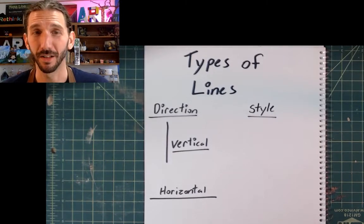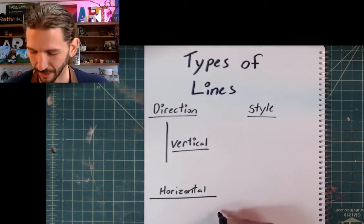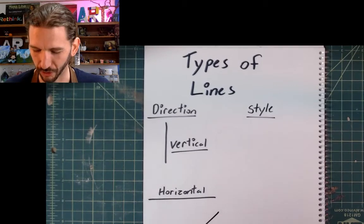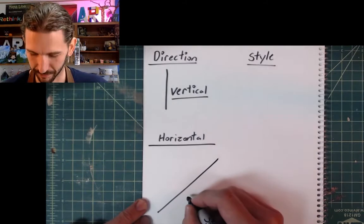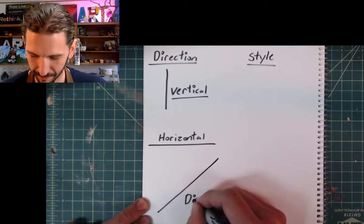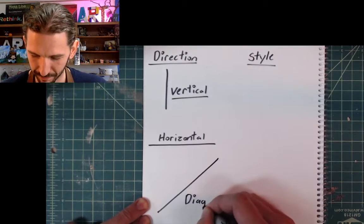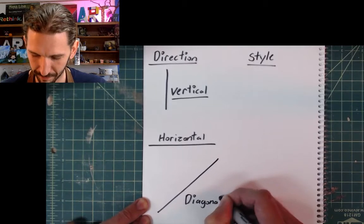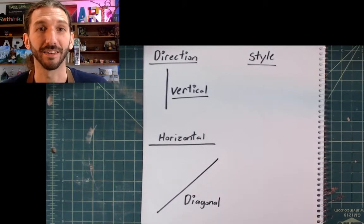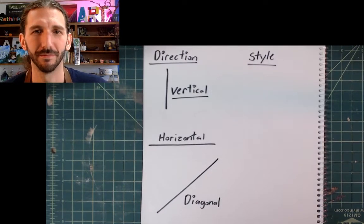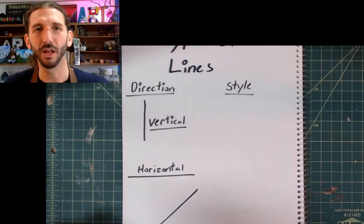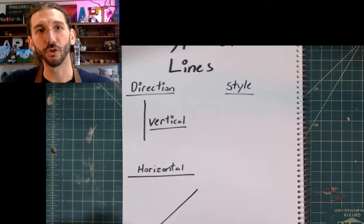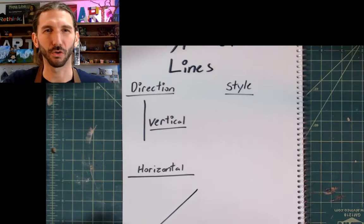How about one that's crooked? A line that goes from one corner to the other corner — we call that diagonal. Can all of you say diagonal? So that's the direction a line can go: either up and down, left and right, or from corner to corner, like a crooked line.